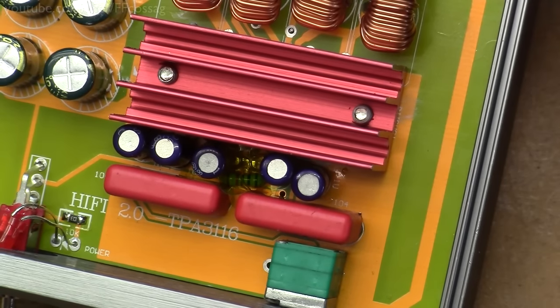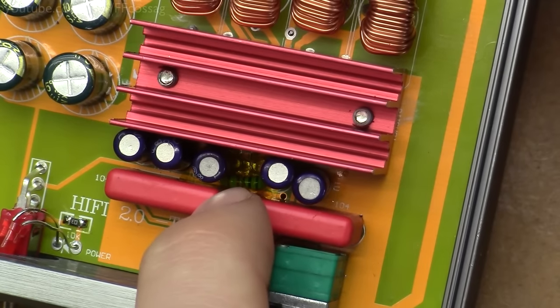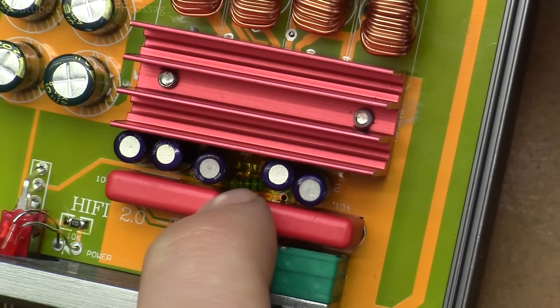I don't have much use for the rather high 32 decibel gain that this amplifier ships with. So I consulted the TPA3116 datasheet and figured out how to configure those two gain configuration resistors in order to lower the setting.